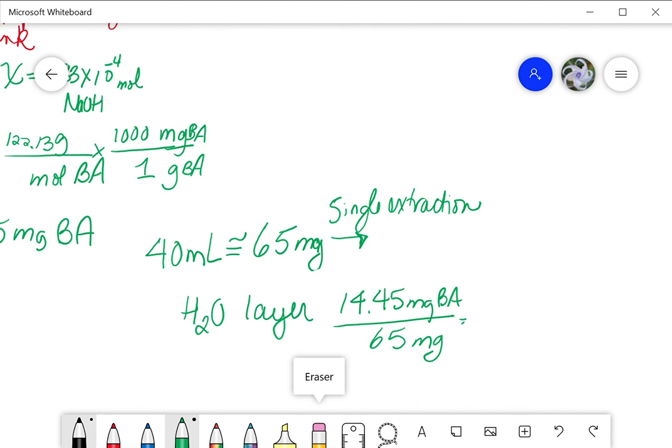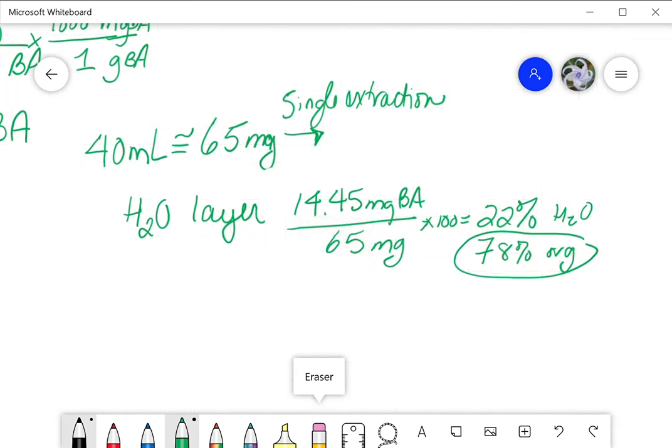Don't forget to multiply times 100 to get your percent. So you should get about—this one said about 22 percent of the sample was in the water layer. And then theoretically that would be what, 78 percent would have been in the organic layer, but we're not going to actually calculate that—we're going to measure that.